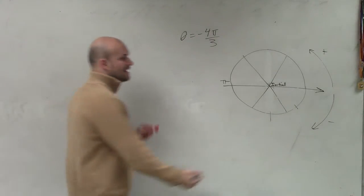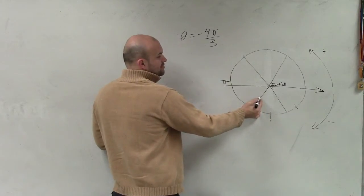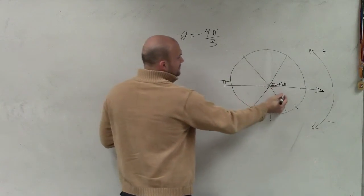Now, going in the negative direction, this is negative pi over 3, negative 1 pi over 3, negative 2 pi over 3, negative 3 pi over 3, negative 4 pi over 3.